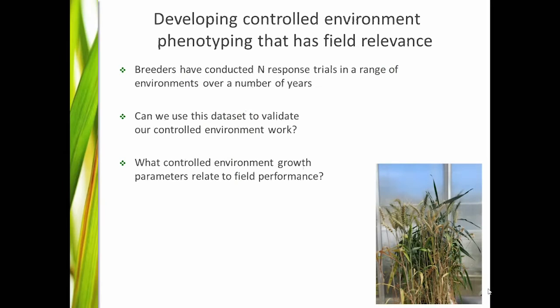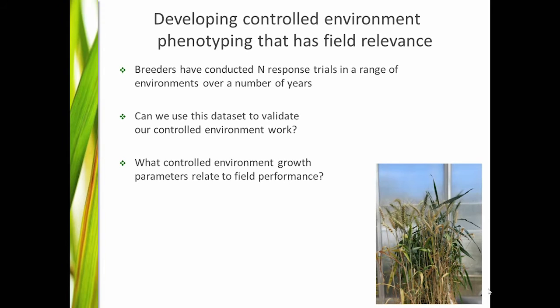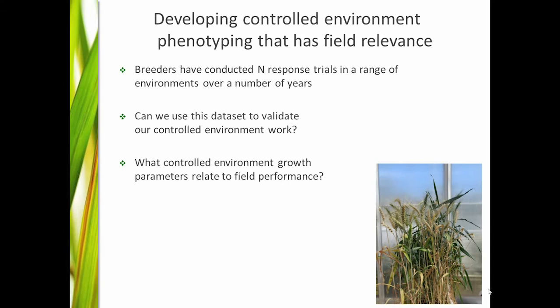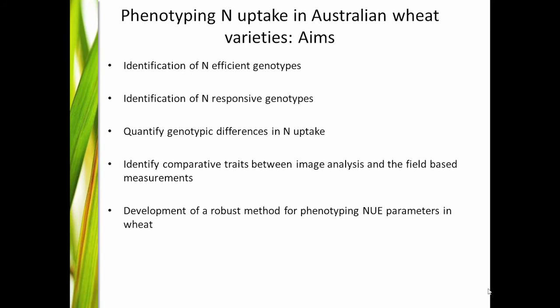The idea was to have field-validated results. The breeders we work with — AGT — have been doing nitrogen response trials in generally about four environments per year, for a number of years with a large germplasm set. We aim to use those field results to validate our controlled environment work and find out what we can relate from the glasshouse to the field. The goal was to identify nitrogen-efficient genotypes — those that can grow well on low N — and also nitrogen-responsive genotypes — those that grow more when given more N — and to quantify differences in nitrogen uptake.